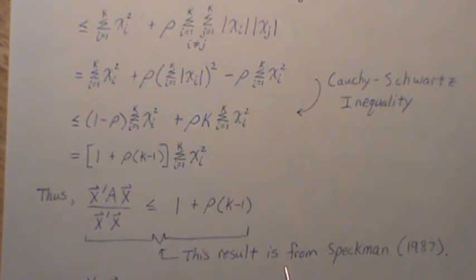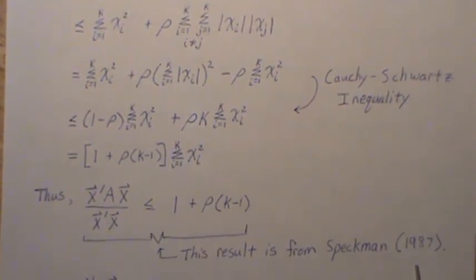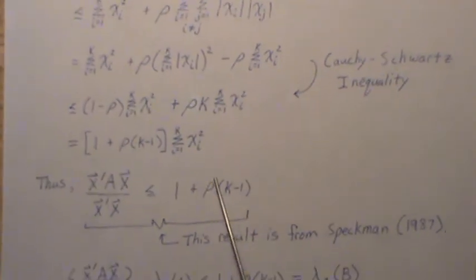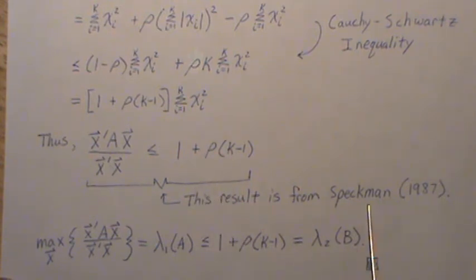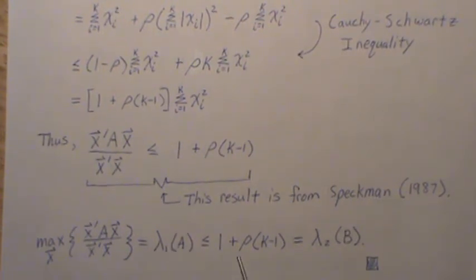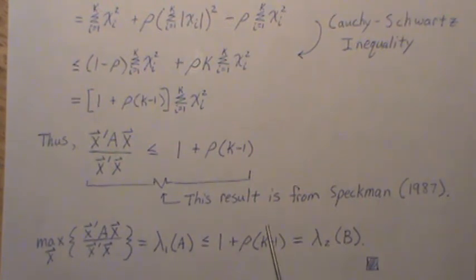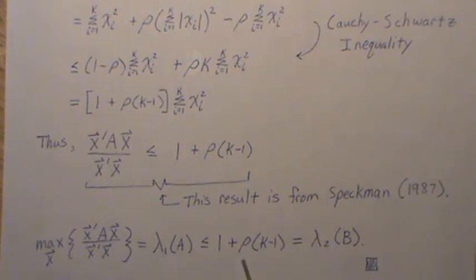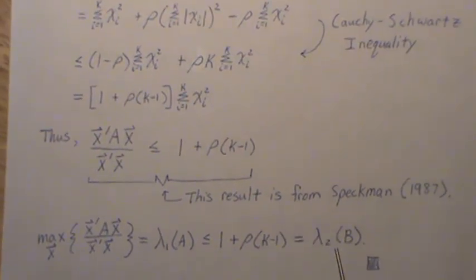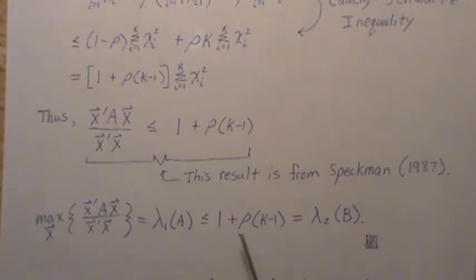This result is from Speckman 1987. Also from Speckman, if we maximize both sides over all x, this piece is the largest eigenvalue of A, which is λ_1(A) ≤ [1 + ρ(k-1)], which equals λ_1(B). But this is the largest eigenvalue of B when ρ is positive. The way we define ρ, it is positive, and so the result follows. That's what we wanted to prove.